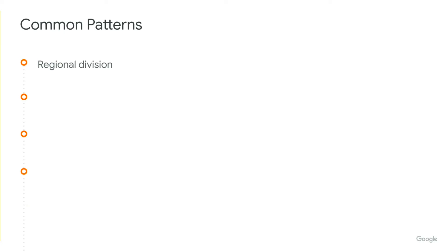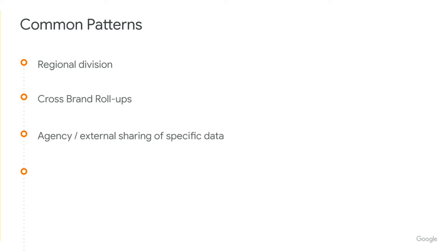Common patterns we tend to see are regional divisions. A brand broken up by regions is very common, where the brand has a single collecting ordinary property and many subproperties based on the regions and countries they support. Another common pattern is a rollup that covers multiple brands — this is especially common with our app clients where they have multiple ordinary properties to service their multiple apps. Third, we see the agency or sub-team model, where you have a team that's focused on a subset of data and really should not be looking at the broader set of data either for regulatory or competitive reasons. You'll definitely want to use a subproperty for that use case, where you can isolate a subset of data collected by the broader ordinary property and not give access to the rest.